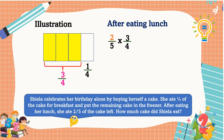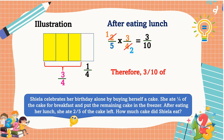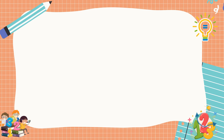Let's multiply two-fifths and three-fourths. Remember to use the cancellation method before multiplying both numerators and both denominators if possible. In this example, two and four have a common factor of two: two divided by two equals one, four divided by two equals two. Then multiply: one times three equals three, five times two equals ten. Therefore, Shella ate three-tenths of the cake.